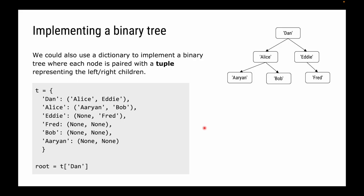We could also use a dictionary to implement this, where every node is paired with a tuple representing the left and right connected node. So Dan has Alice and Eddie as its left and right child, Alice has Arian and Bob, Eddie has none and Fred, Fred has none and none, Bob has none and none, and Arian has none and none — because they're all leaf nodes.